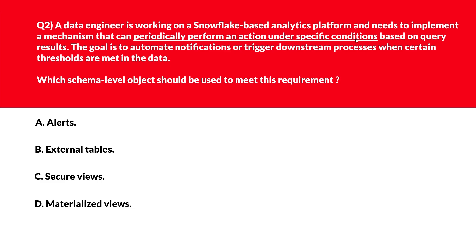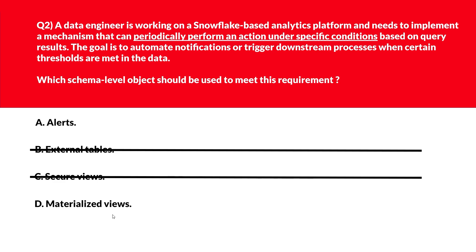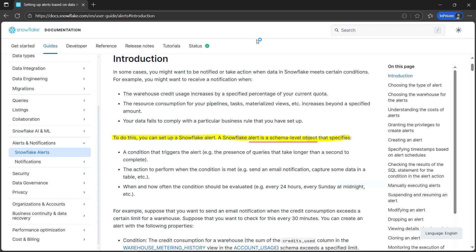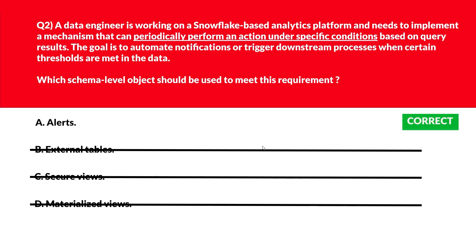Option C says secure views — secure views control visibility but do not perform actions, wrong answer. Option D says materialized views — materialized views optimize queries but do not trigger actions, wrong answer. If you look at the official documentation, it mentions that you can set up a Snowflake alert, and a Snowflake alert is a schema-level object. That's what is required. We'll lock option A, alerts, as the right answer.